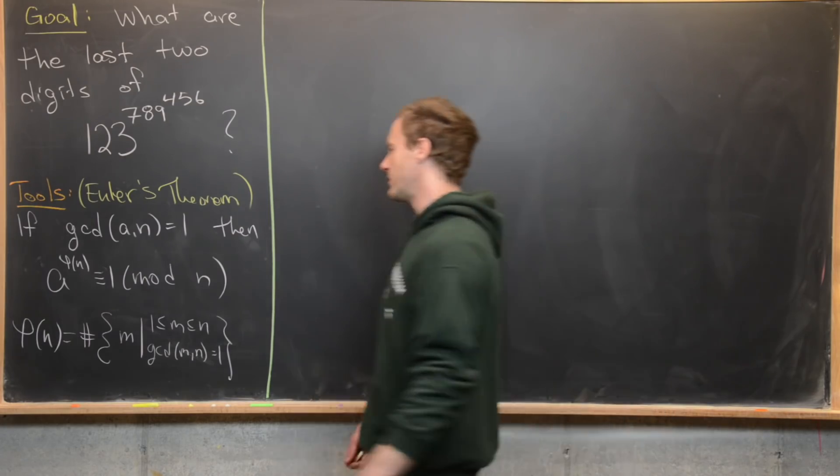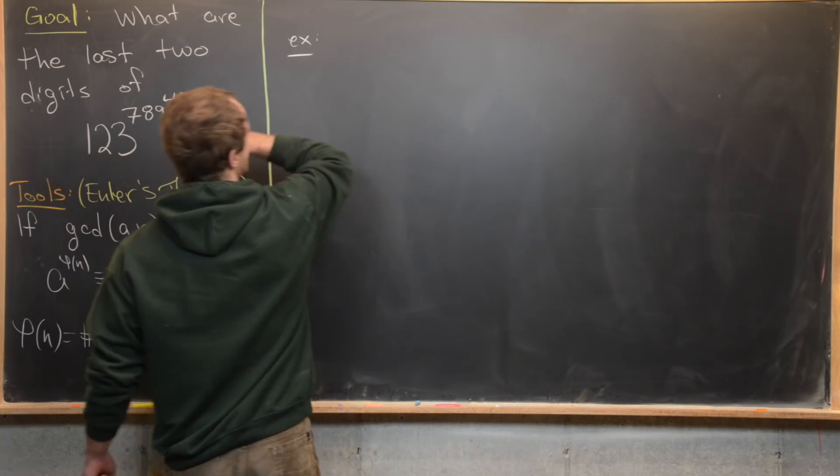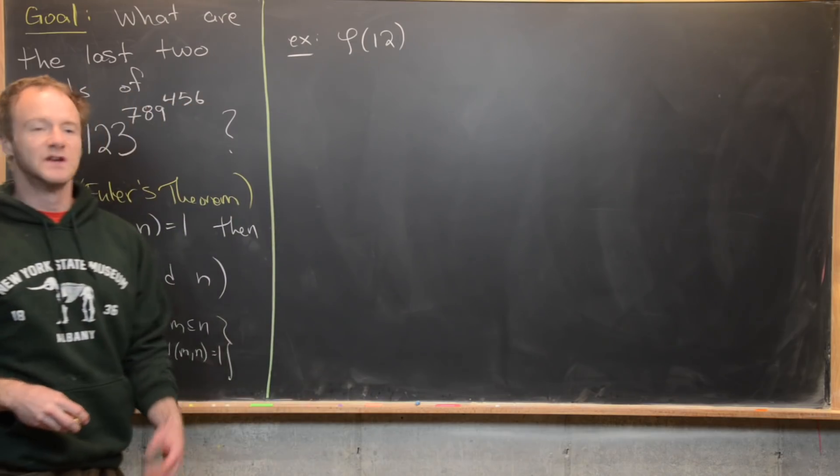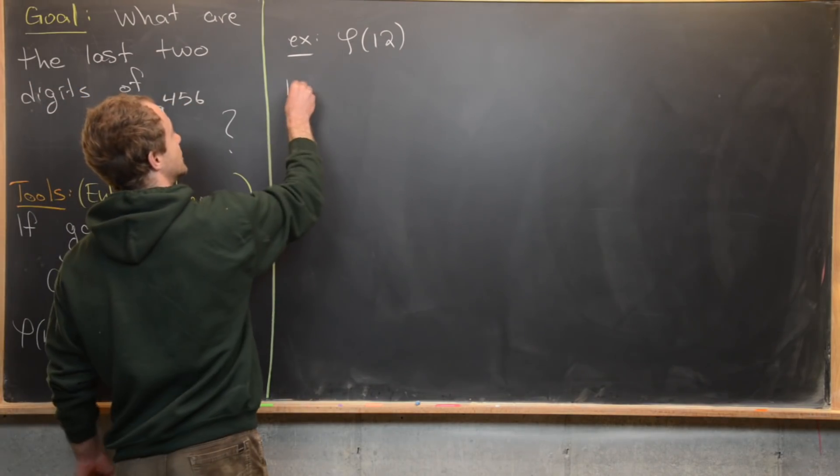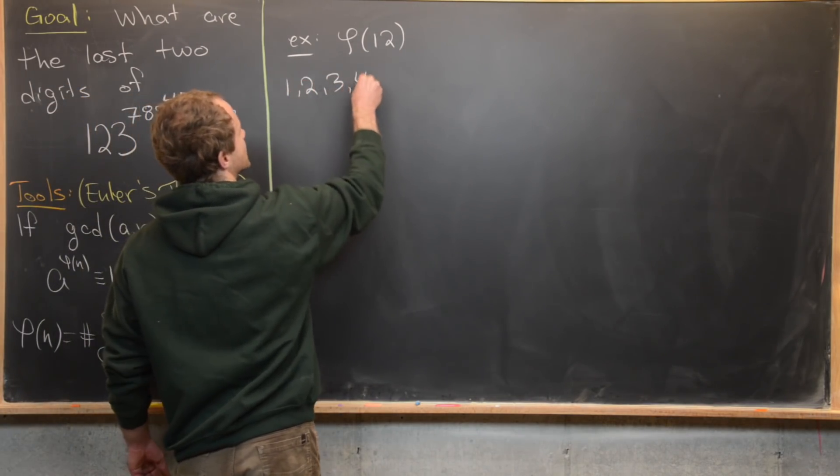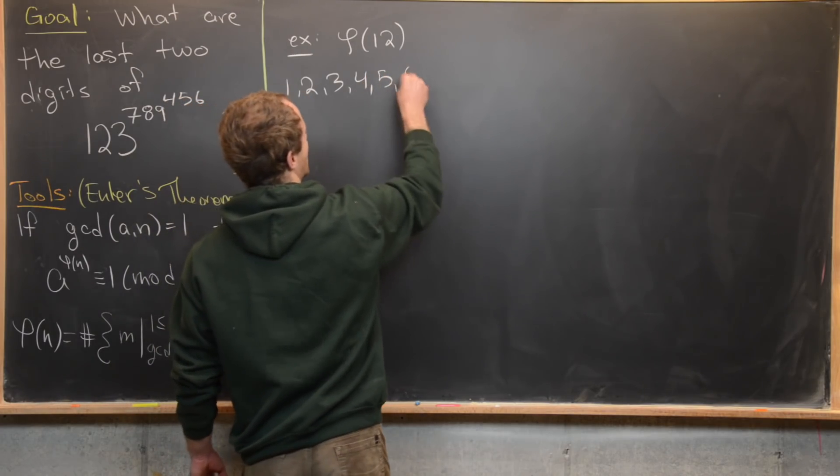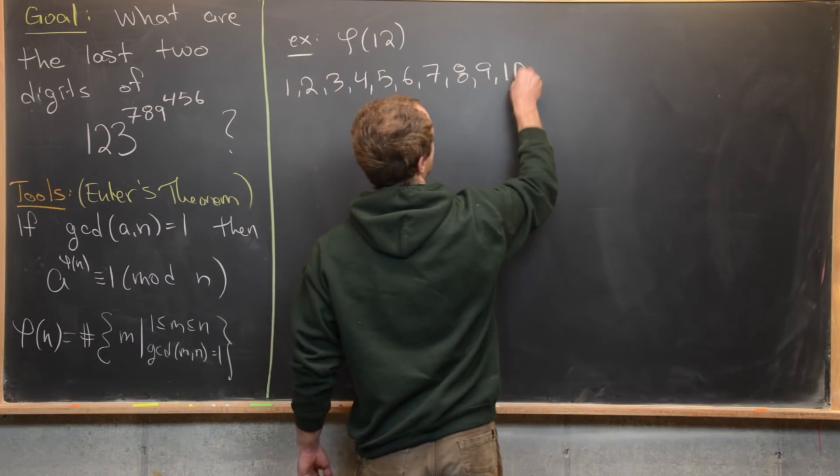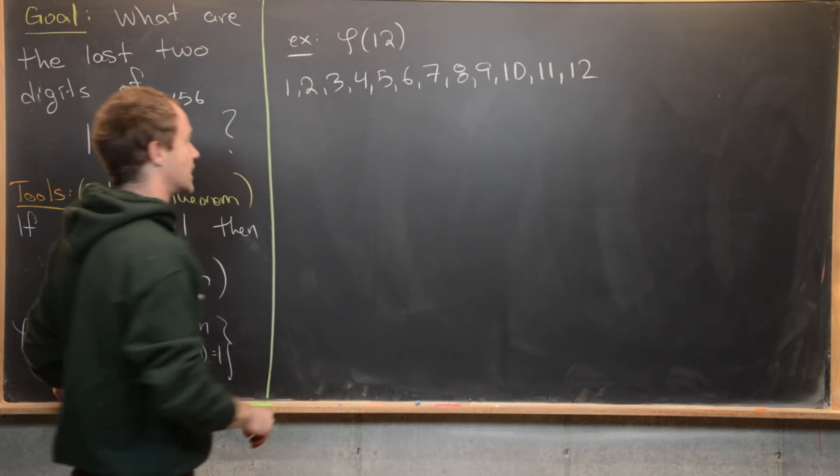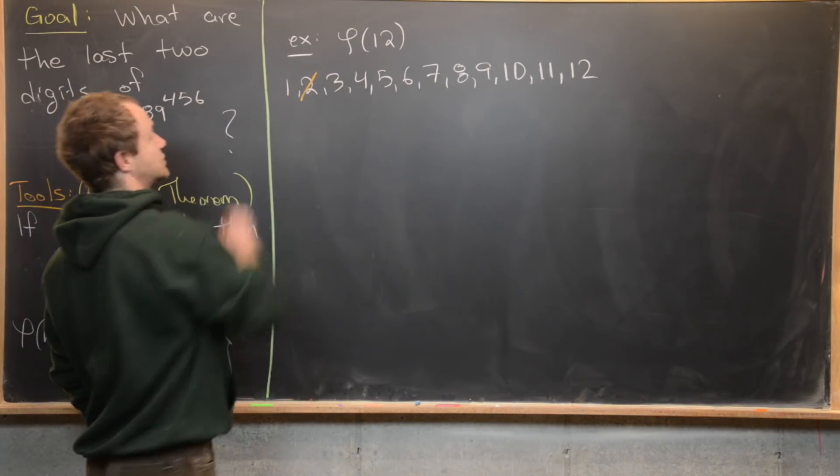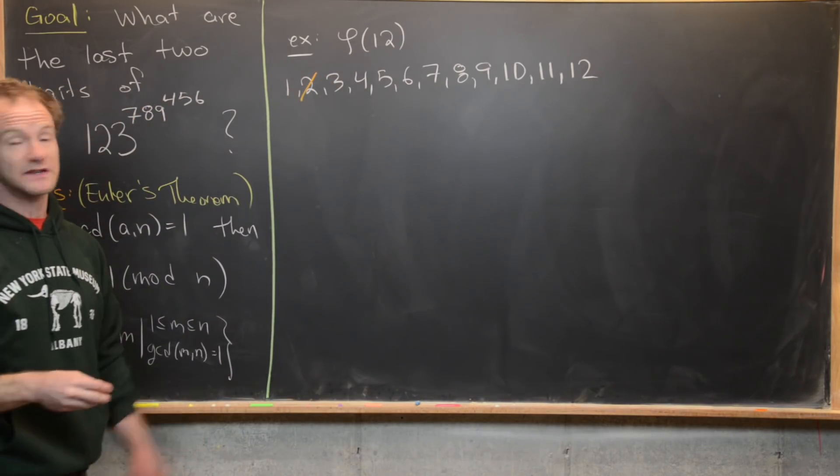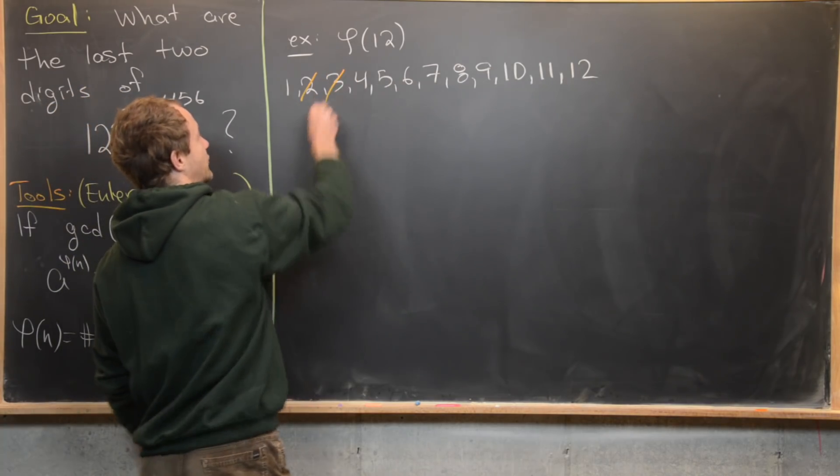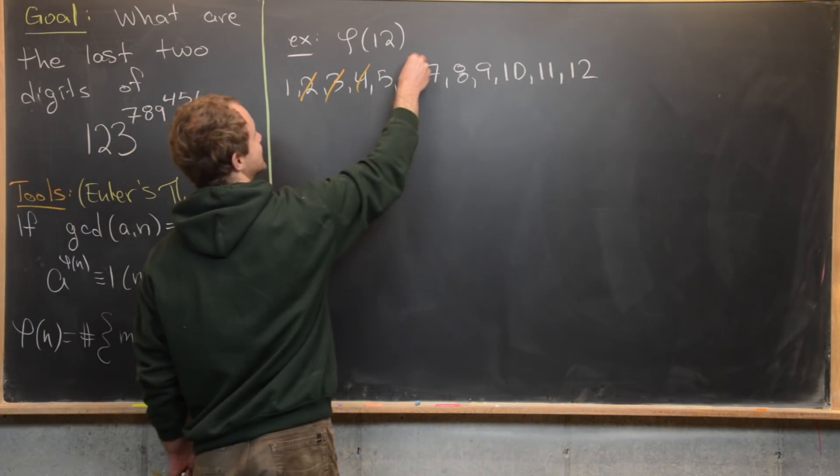Let's maybe look at some examples real quick. So for instance, we could look at phi of 12. Maybe the best thing to do is just to look at all the numbers between 1 and 12 and cross out the ones that are not relatively prime to 12. So we have to cross out 2. Notice that 2 is a divisor of 12, so it's definitely not relatively prime with 12. 3 is no good, 4 is no good, 6 is no good.